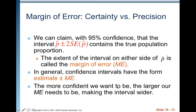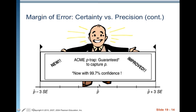The more confident we want to be, the larger our margin of error needs to be, making the interval wider — but you lose precision. For example, the 'Acne p-trap improved' now captures p with 99% confidence by going three standard errors on either side of p-hat instead of two, giving a much larger interval. So if you're trying to be precise about a particular value, you're losing precision but gaining confidence.